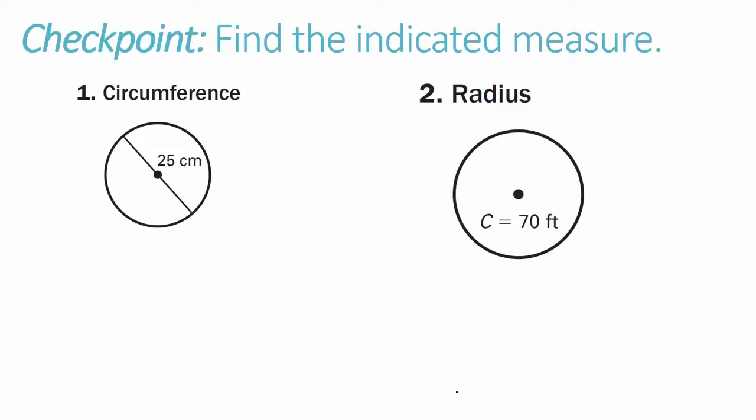Checkpoint problems 1 and 2 are yours. For each of these problems, find the indicated measure. For problem 1, find the circumference of the circle with diameter 25 centimeters. For problem 2, find the radius of the circle when your circumference is 70 feet.